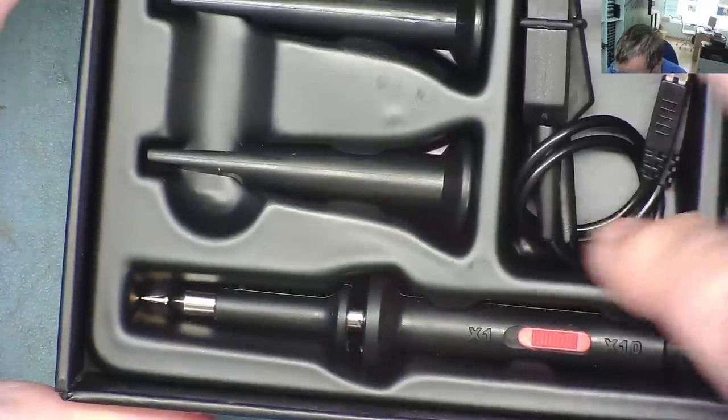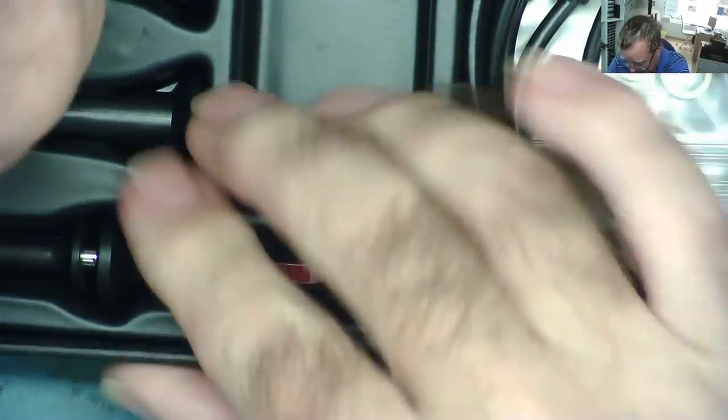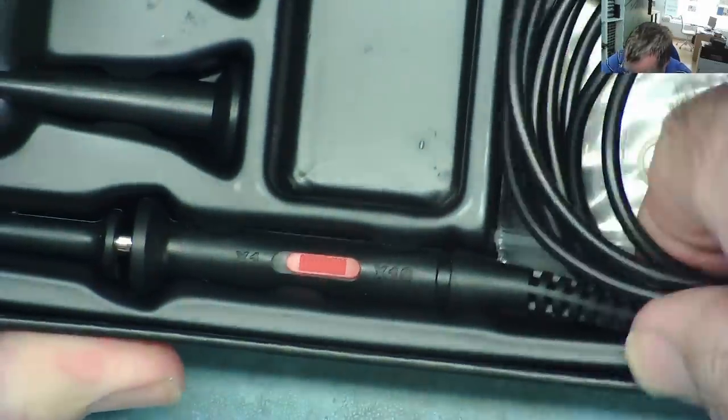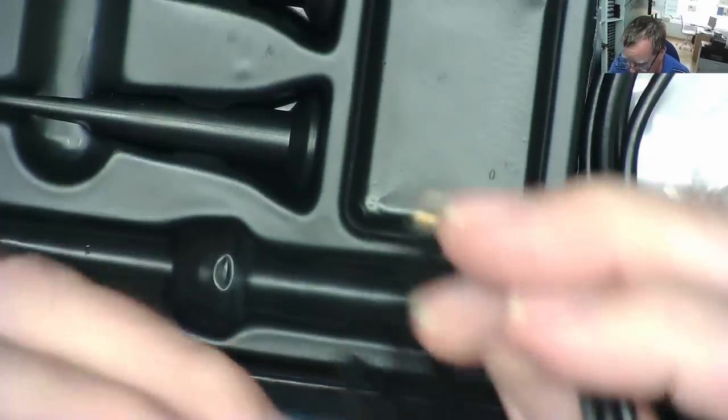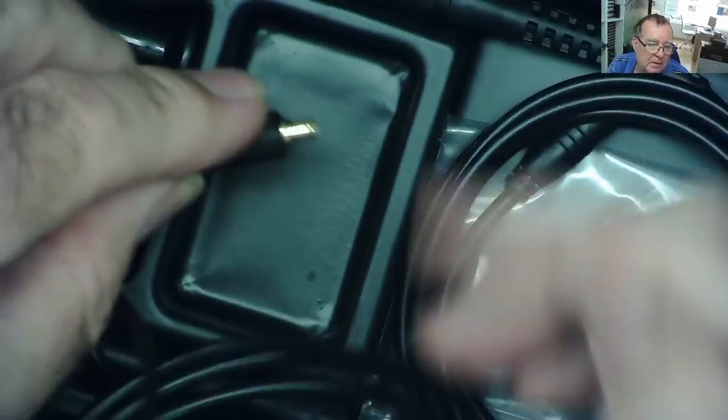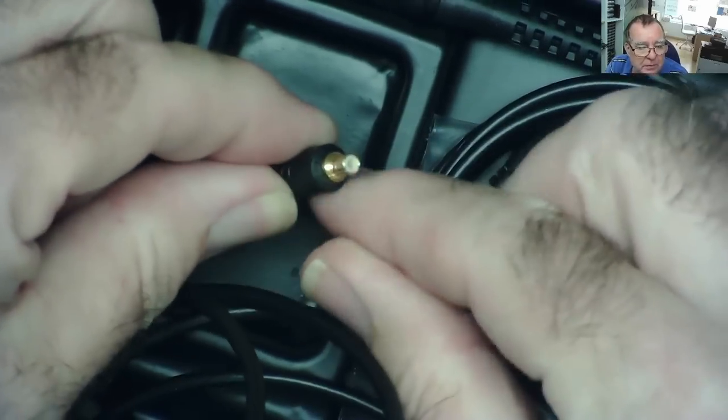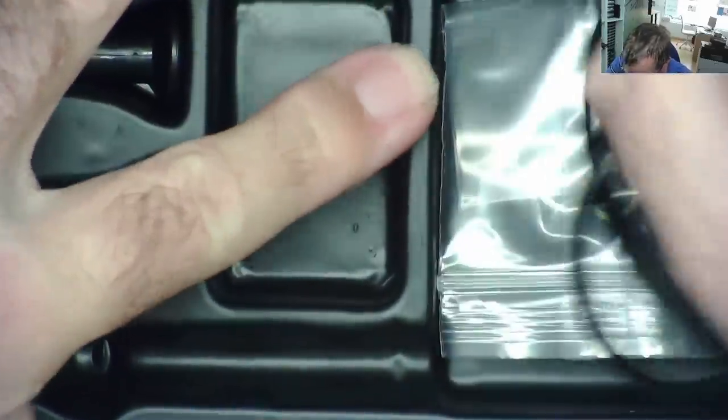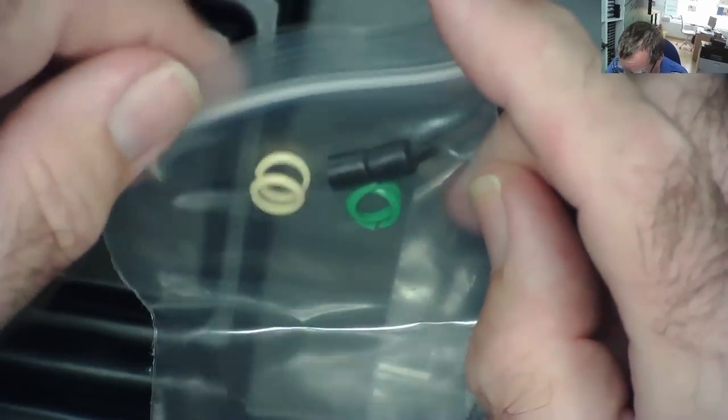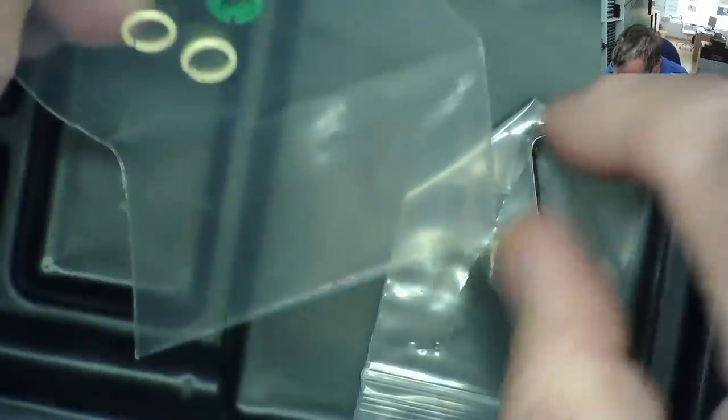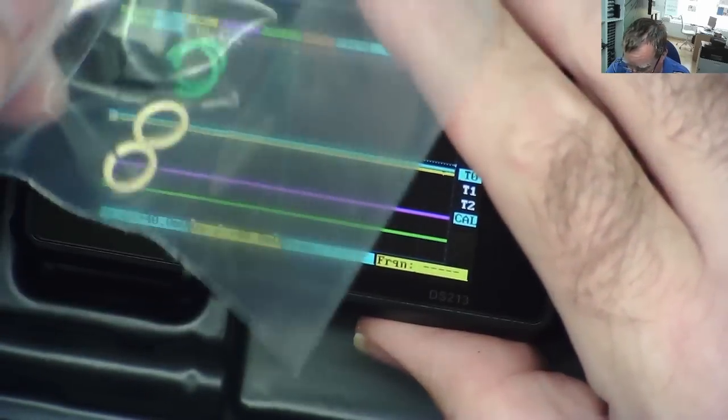It came with the scope probe kits. These look like pretty much standard scope probes. Very well held in there. One times, ten times scope probes. They have these funny little connectors, not like a normal BNC connector. They're something with little push-in connectors. Little colored rings, so you can identify probe one and probe two. I'm not sure they actually correspond to the color on the screen. It's got a yellow, and a green, and a cyan, and a magenta.